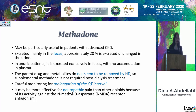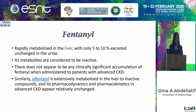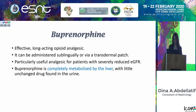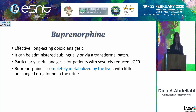Methadone may be more effective for neuropathic pain than other opioids. Fentanyl is rapidly metabolized in the liver with inactive metabolites, and there does not appear to be any clinically significant accumulation when administered to CKD patients. Buprenorphine is an effective, long-acting opioid that can be administered sublingually or by transdermal patch. It is particularly useful for patients with severely reduced GFR and is completely metabolized by the liver.